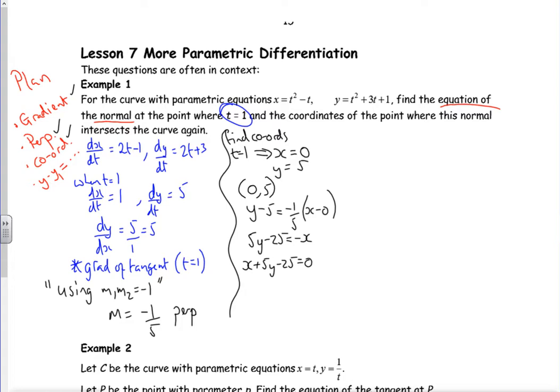Now it says find the coordinates where the normal intersects again. So I've got a curve and I've got a line that crossed when t is 1, but it'll also cross somewhere else. So just like normal maths we'd solve it, but we haven't got two equations to put equal to each other. This time we've got three equations, so what I need to do is put them into here. So I'm going to sub those in.